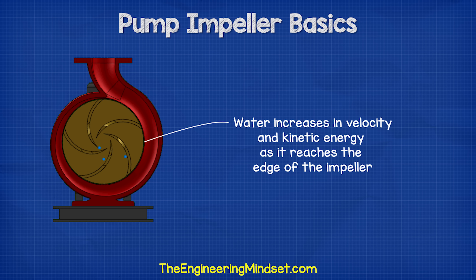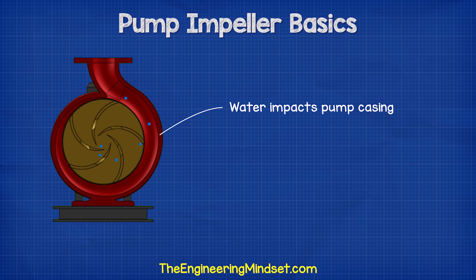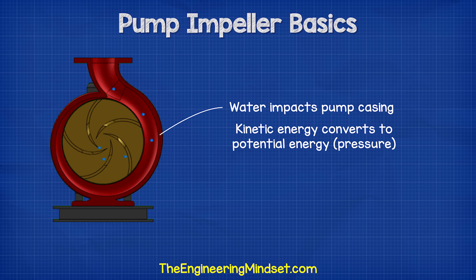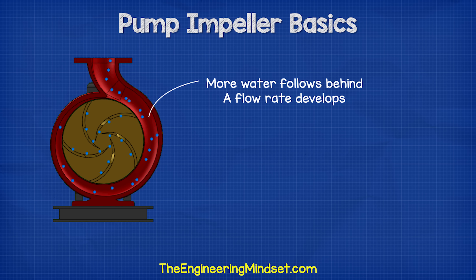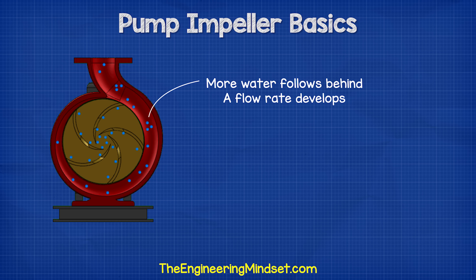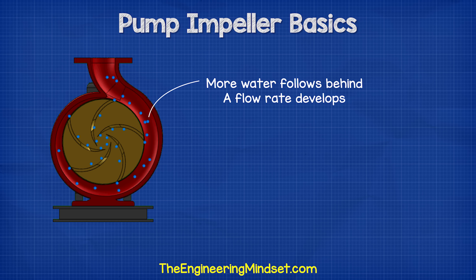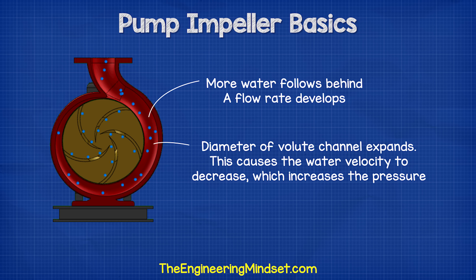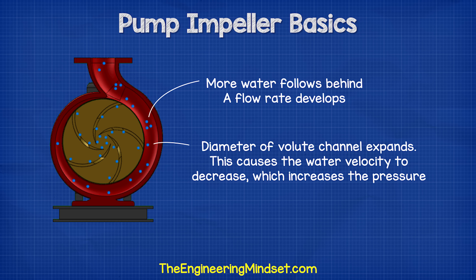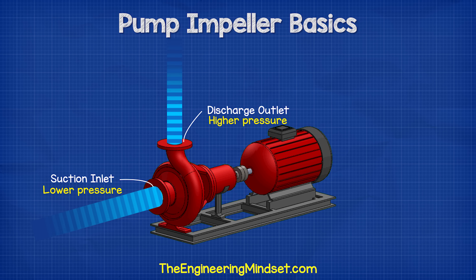This high-speed water flows off the impeller and into the volute, where it hits the wall of the pump casing. This impact converts the velocity into potential energy or pressure. More water follows behind this and so a flow develops. The volute channel has an expanding diameter as it spirals around the circumference of the pump casing. As it expands, the velocity of the water will decrease, resulting in pressure increasing. This expanding channel therefore allows more water to keep joining and converting into pressure.